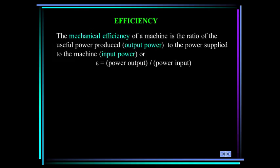Now let's define efficiency. The mechanical efficiency of a machine is the ratio of the useful power produced, the output power, to the power supply, or the input power. Epsilon is what we use to denote efficiency. Now machines will always have frictional forces. Since frictional forces dissipate energy, additional power will be required to overcome these forces. Consequently, the efficiency of a machine is always less than one.